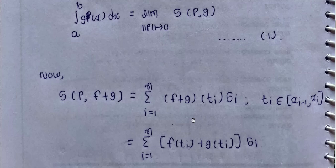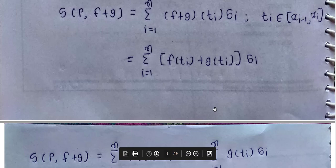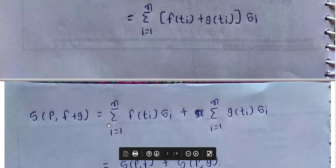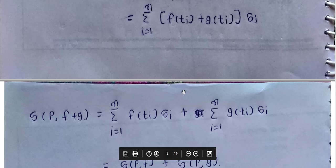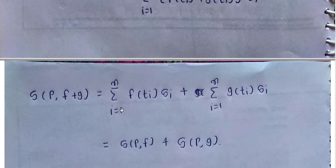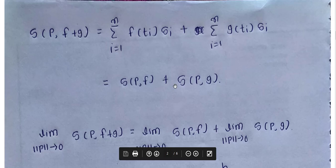This equals summation i from 1 to n of [f(tᵢ) + g(tᵢ)] · Δxᵢ, which can be separated as summation i from 1 to n of f(tᵢ)·Δxᵢ plus summation i from 1 to n of g(tᵢ)·Δxᵢ. So S(P, f+g) = S(P, f) + S(P, g).